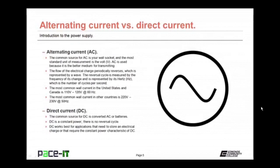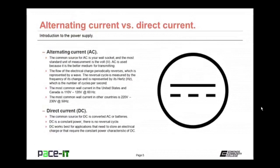The most common voltages in the United States and Canada are 110 to 120 volts at a 60 hertz cycle. The most common wall current in other countries is 220 to 230 volts at a 50 hertz cycle. Direct current, DC, is usually derived from converted AC power or from batteries. Direct current is a constant power — there is no reversal cycle. DC works best for applications that need to store electrical charges, like a battery, or that require the constant power characteristic of DC, like computers. Computers require DC current.